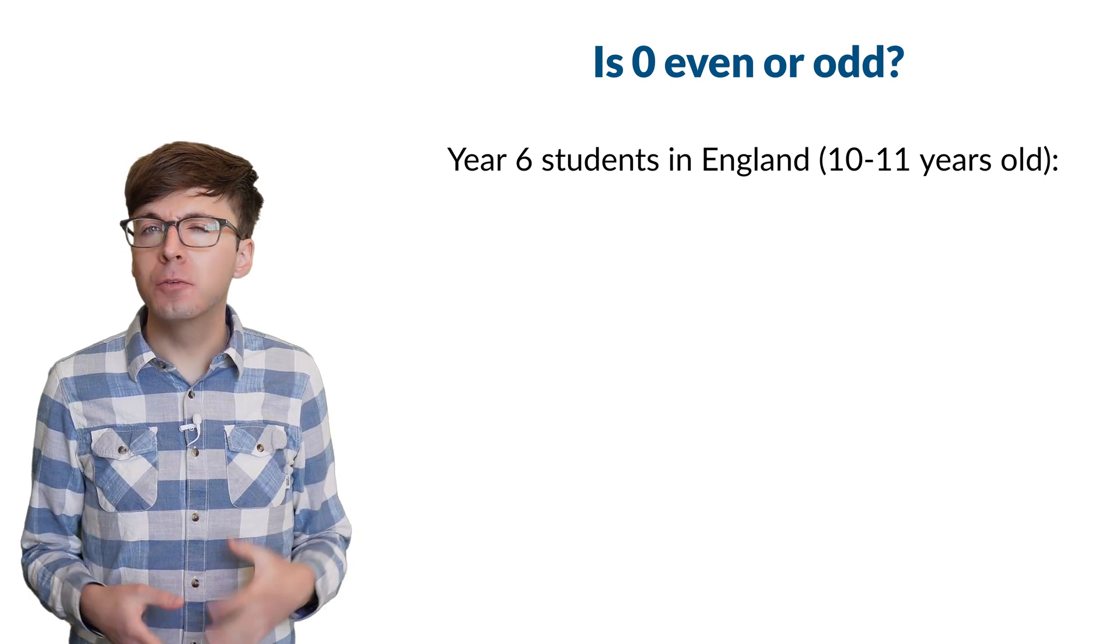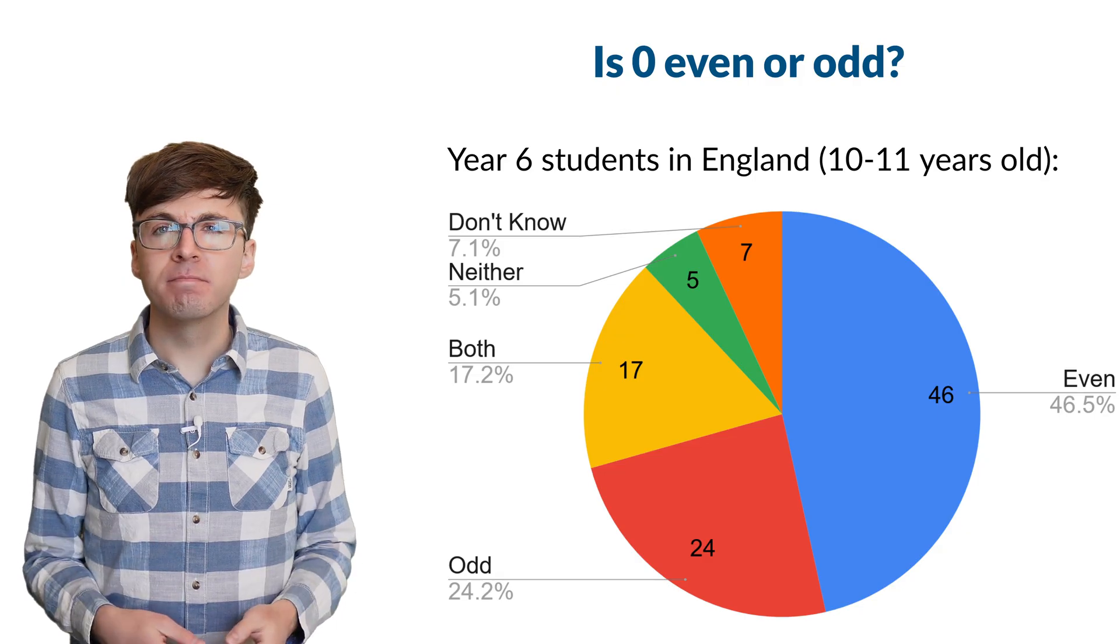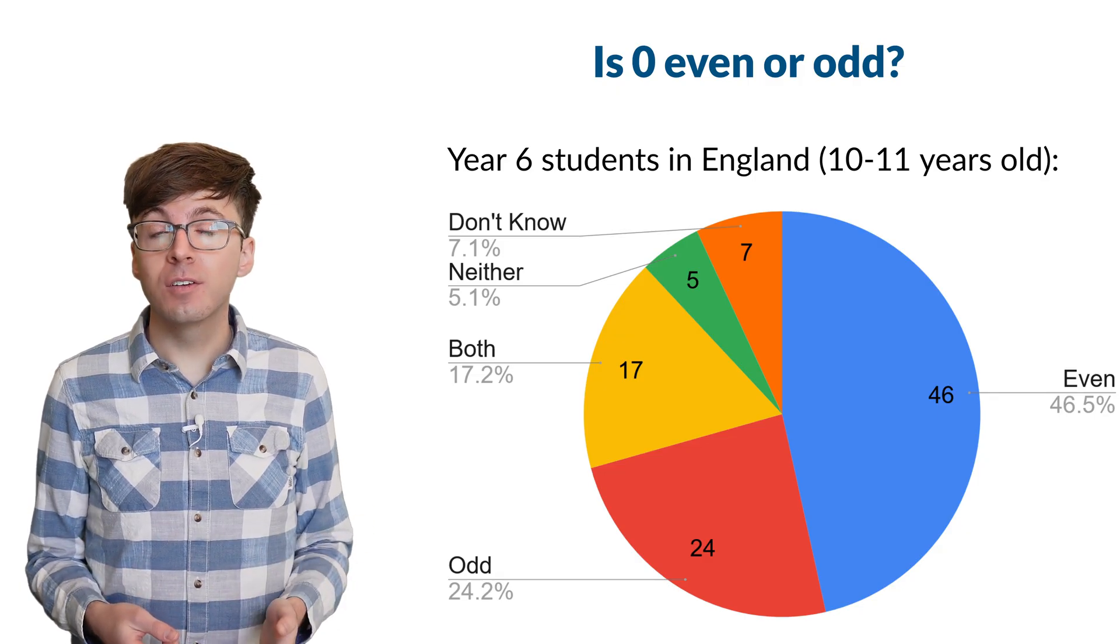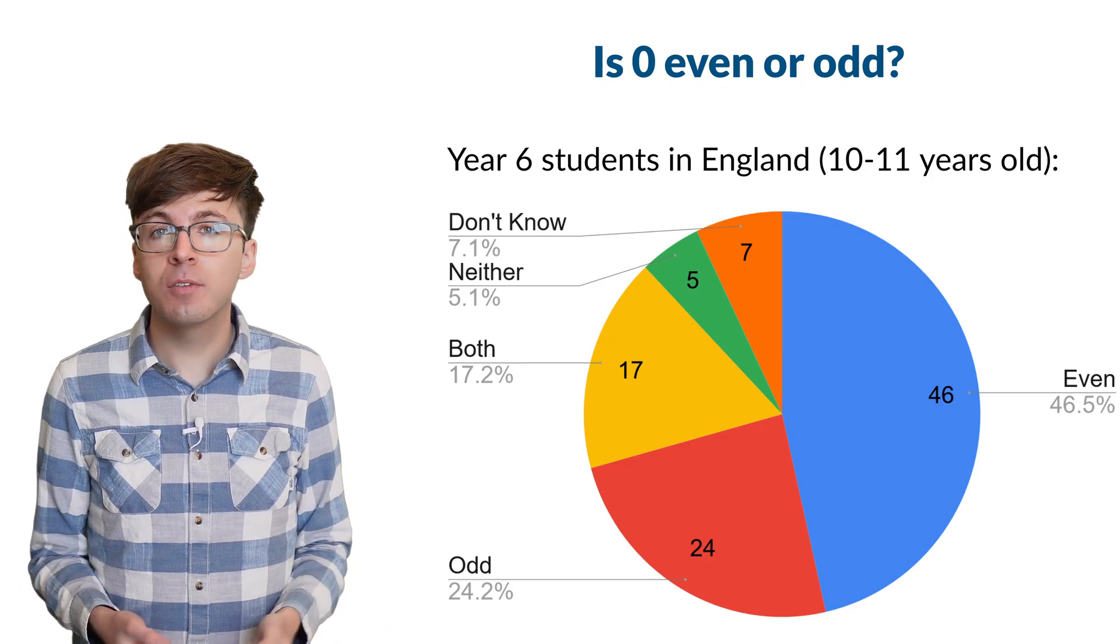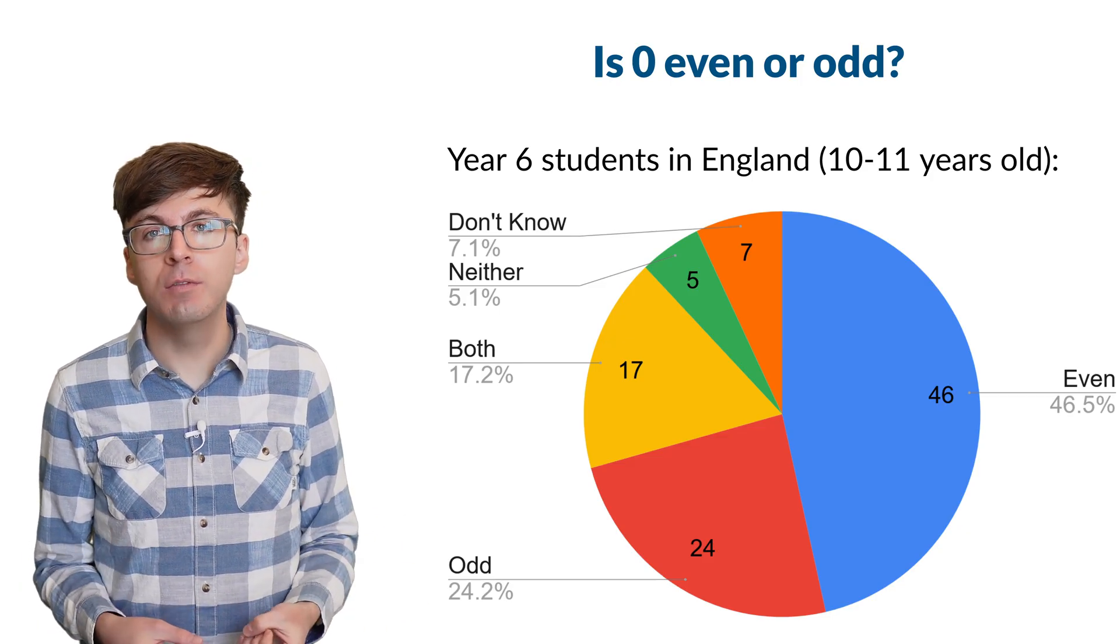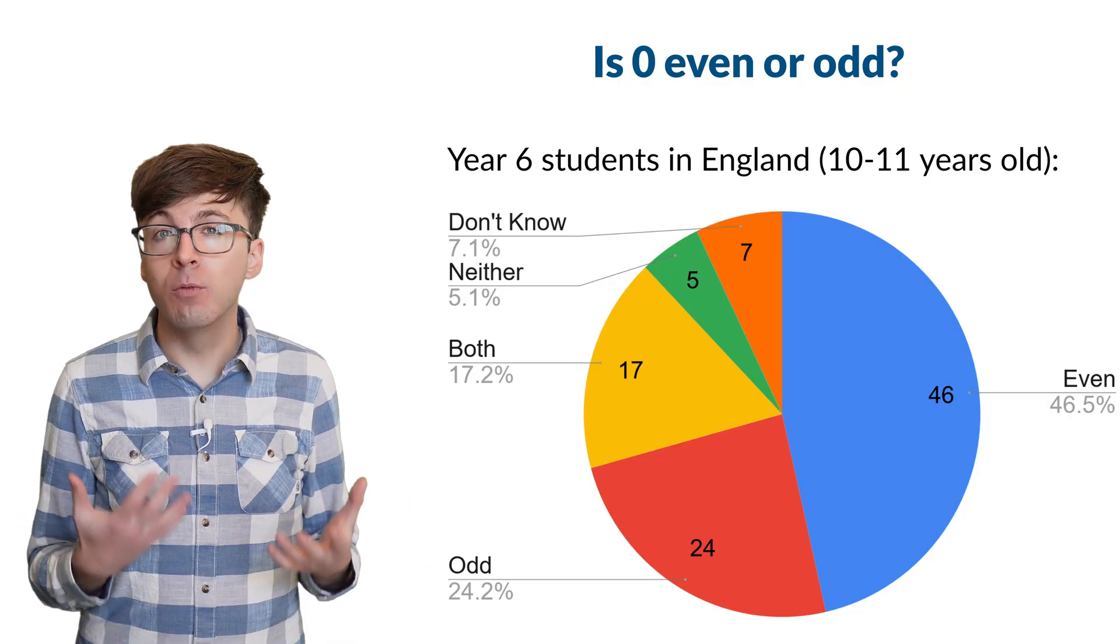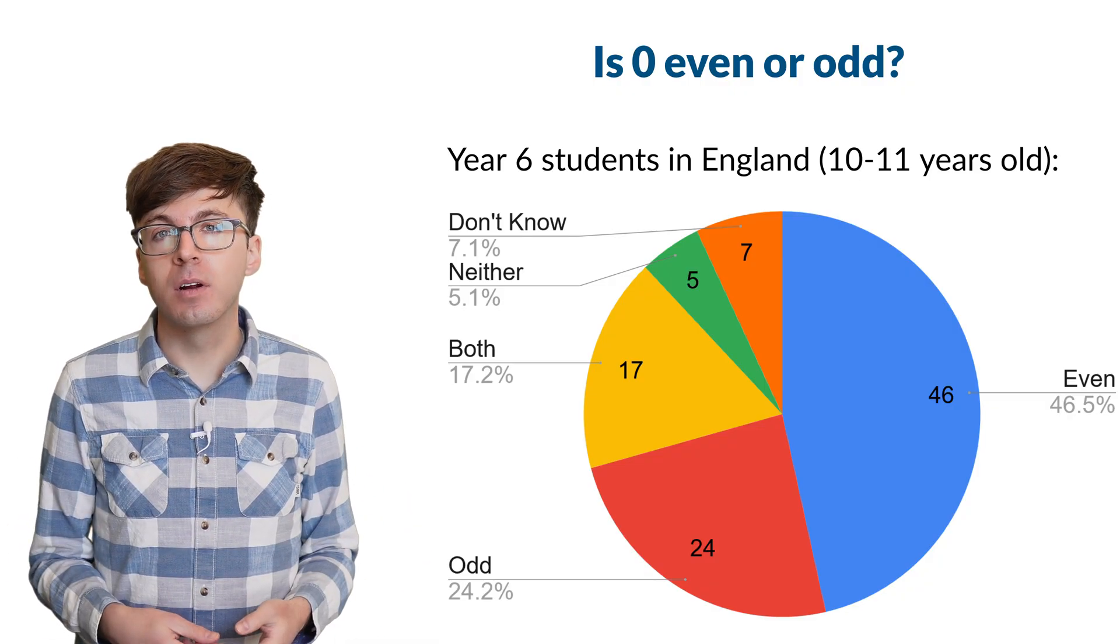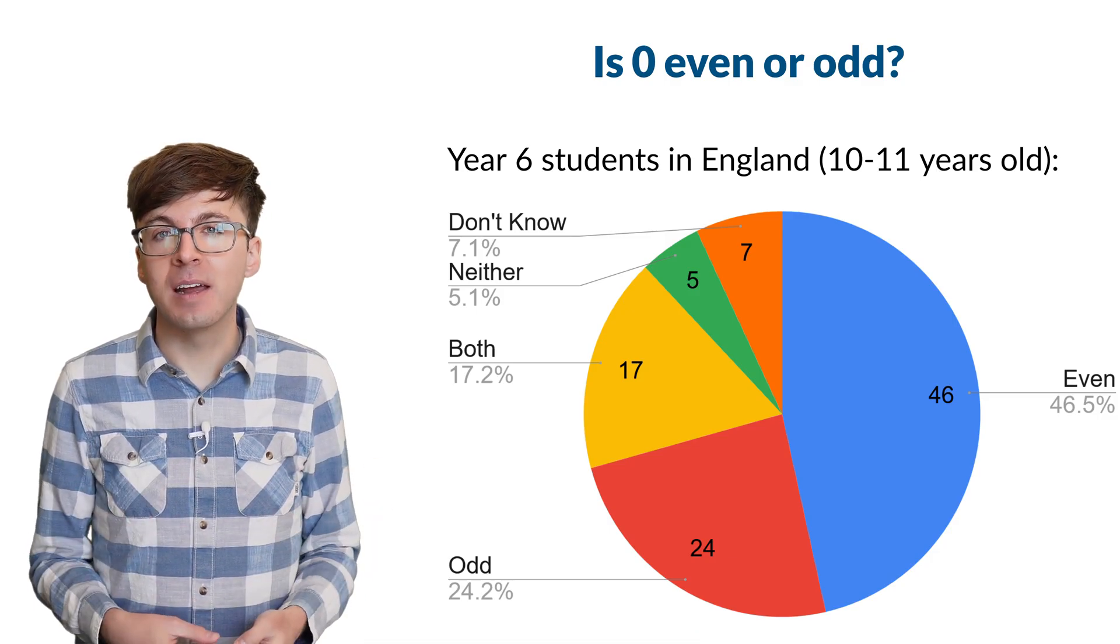One of the timeless grade school debates is whether zero is even or odd, or both or neither. For centuries, zero was not considered to be an actual number, so it's natural that at first people would have some hesitation calling zero even. Let's show that zero is even and explore why we really want zero to be an even number, in everything from arithmetic and algebra to more advanced mathematics.